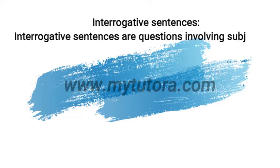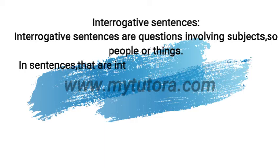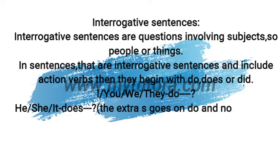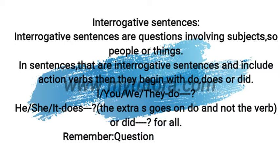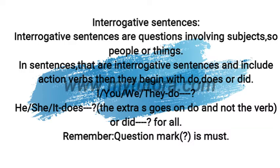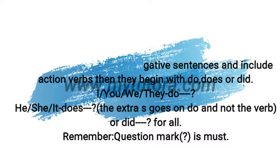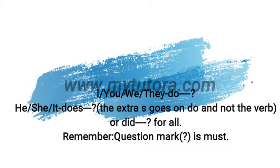Now let's have a look at interrogative sentences. Interrogative sentences are questions involving subjects, so people or things. In sentences that are interrogative and include action verbs, they begin with do, does, or did. For I, you, we, they, it is: do, then object, then question mark. For he, she: does, then object, then question mark. The extra S goes on do and not the verb. Or did, then object, then question mark for all.